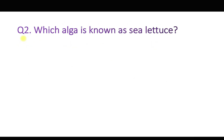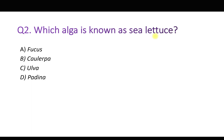Question number two: Which alga is known as sea lettuce? Option A: Fucus, B: Caulerpa, C: Ulva, and D: Spirogyra. Sea lettuce — these are marine algae which are found on rocky shores; they get attached to stones, rocks etc. It is also an edible alga. The correct answer is option C, Ulva. They are also called sea lettuce. That was a very simple question; I hope you answered it correctly.